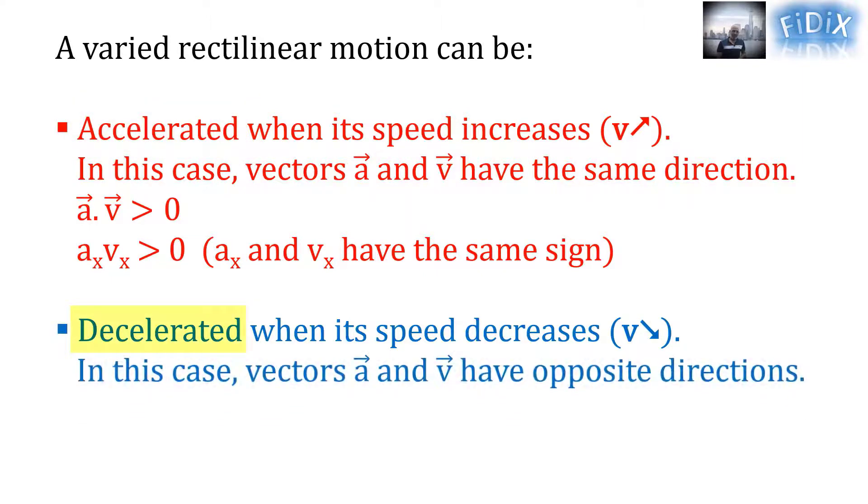When it is decelerated, vectors a and v have opposite directions, thus a scalar v is negative, which leads to ax·vx is negative and means that ax and vx have opposite signs.